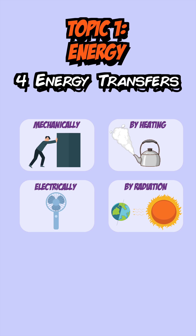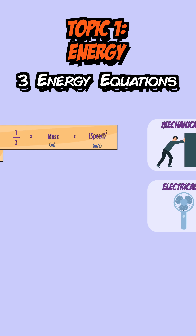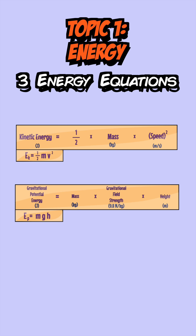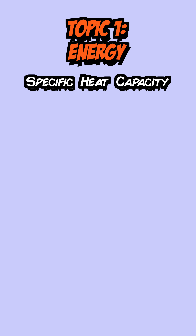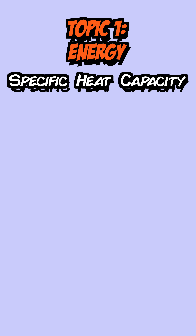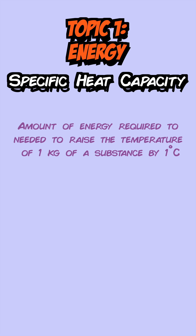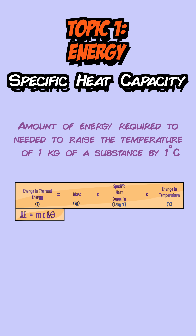Three of these energy stores have equations you need to be familiar with: kinetic energy, gravitational potential energy, and elastic potential energy. Next, we have specific heat capacity, which is defined as the amount of energy required to increase the temperature of one kilogram of an object by one degree Celsius. The equation for this is: energy equals mass times specific heat capacity times change in temperature.